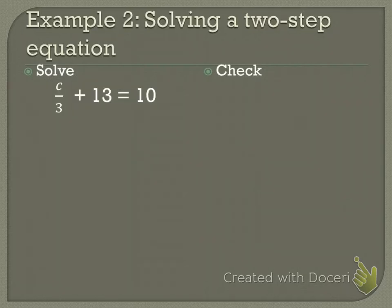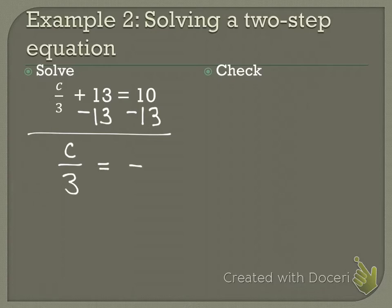In Example 2, now I have what operation connected to my variable? Division. And that's the only difference. I still know how to solve when it's division connected. But my first step is still the same. What do I do first? Subtract 13 from both sides. Very good.